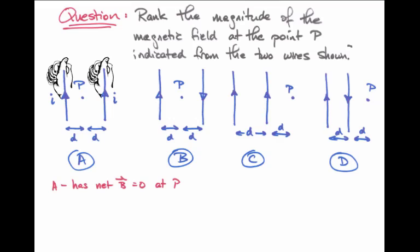It turns out case A has a net magnetic field at P given by zero. If we use the right-hand rule, then the magnetic field around the left-hand wire, if our thumb points along the wire, is always given by the direction our fingers point.